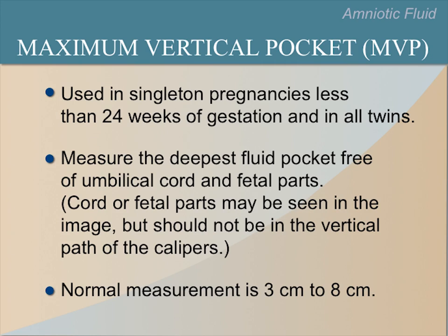To find the MVP, locate the largest pocket and measure its vertical height. If there are twins, we measure the largest pocket for each twin. Measure the deepest fluid pocket, free of umbilical cord and fetal parts. Note that cord or fetal parts may be seen in the image but should not be in the vertical path of the calipers. A normal MVP measurement is between 3 and 8 centimeters.